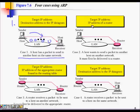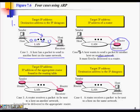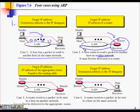Case two: a host wants to send a packet to another network. It must pass through a gateway router, and to send to that router I need to know its MAC address. So I send a broadcast ARP request asking for the MAC address of that router, and the router sends a unicast ARP reply.